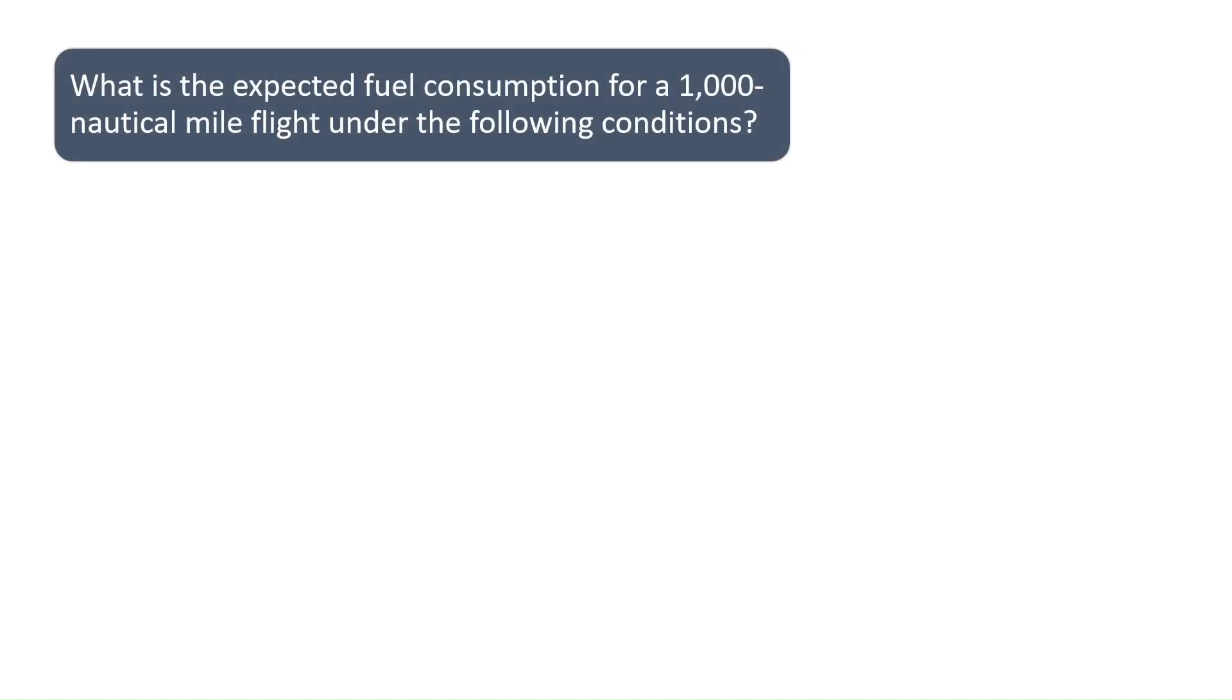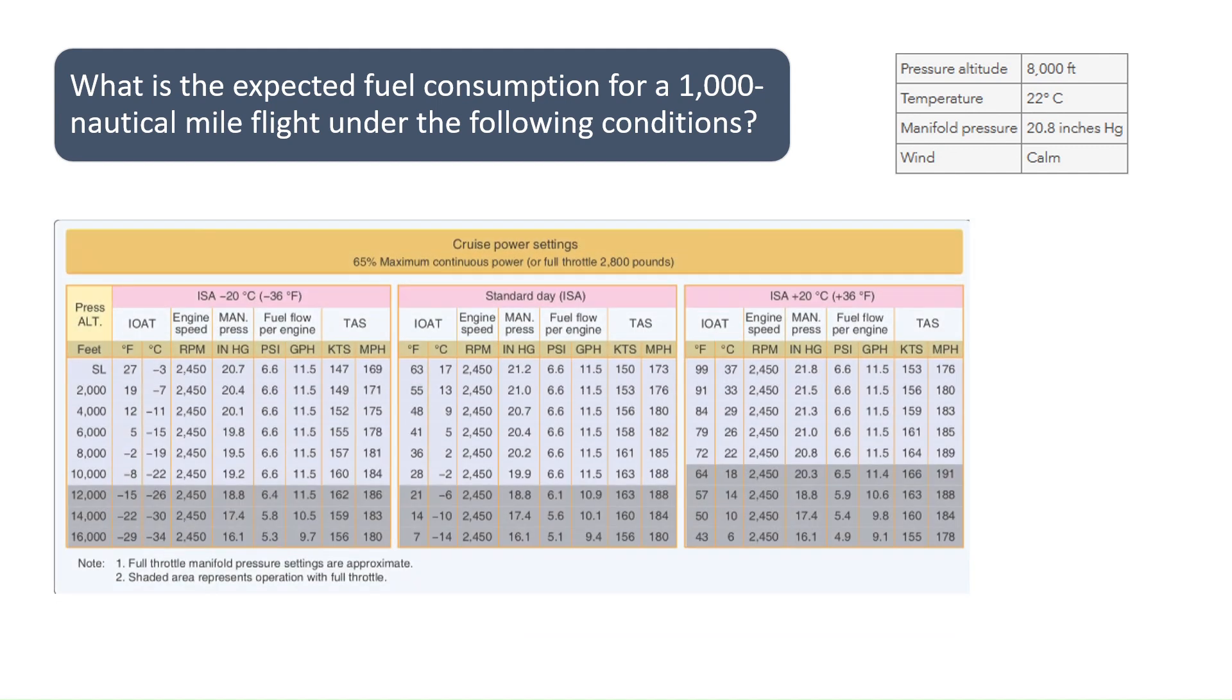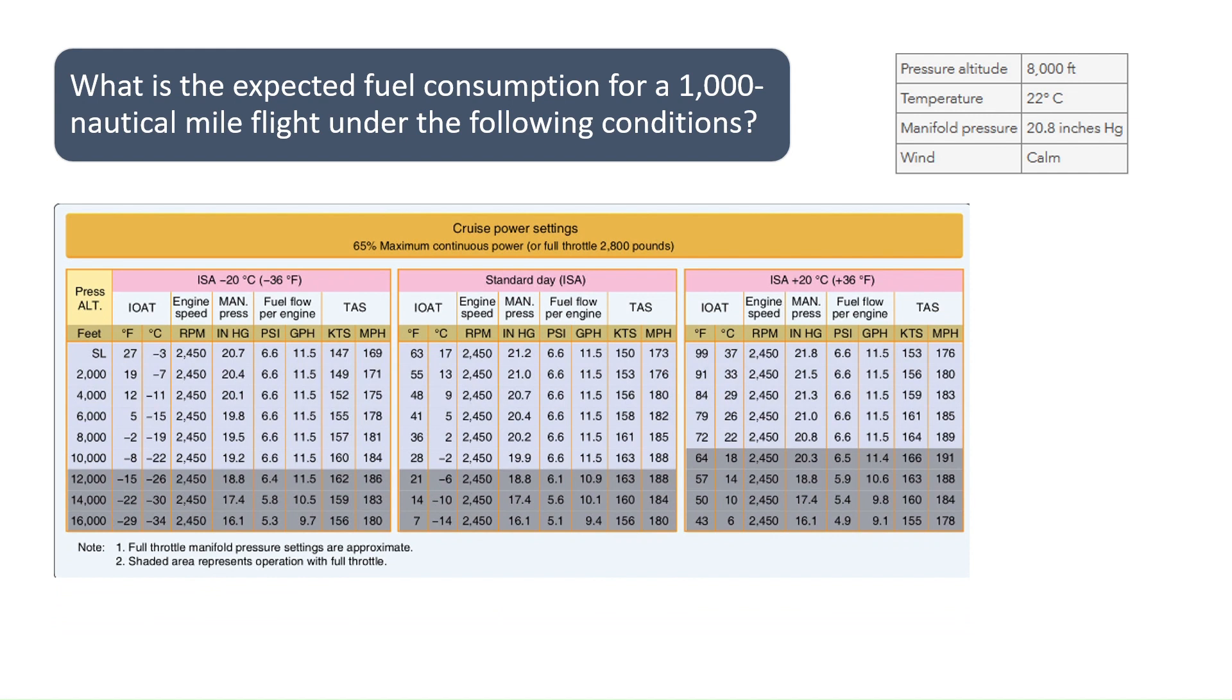What is the expected fuel consumption for a 1,000 nautical mile flight under the following conditions? The pressure altitude is 8,000 feet, temperature is 22 degrees Celsius, manifold pressure is 20.8 inches, and the wind is calm.